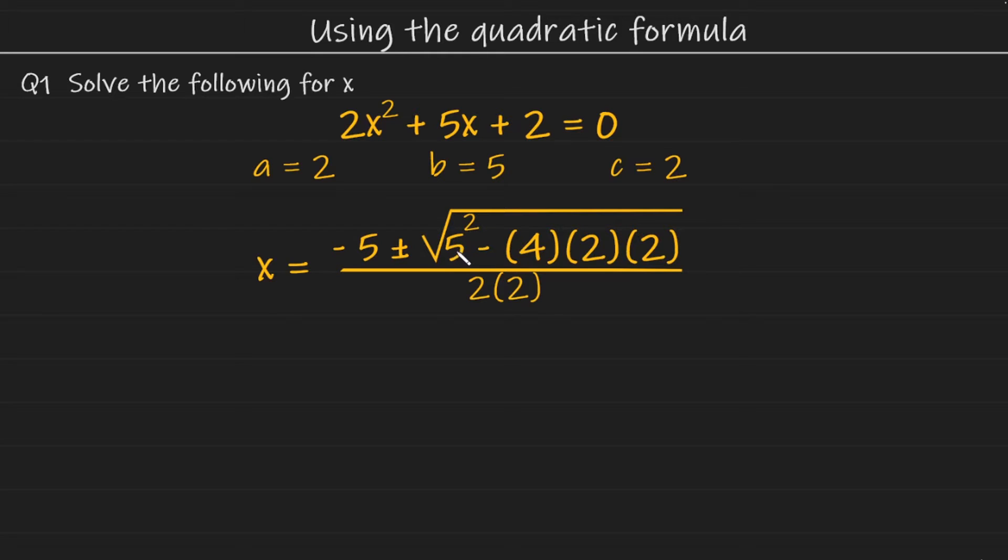Here we have 5 squared. 5 times 5 is 25. And here we have 4 multiplied by 2 multiplied by 2, which is 16. So we're going to have 25 here minus 16. And on the bottom, it's going to be 2 multiplied by 2, which gives us 4.